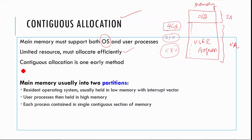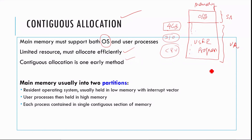Contiguous allocation is one early method of memory management. As operating systems developed, the mechanisms for loading processes into memory also improved.